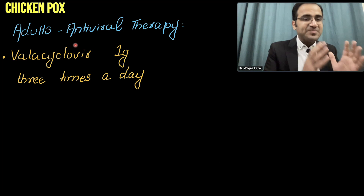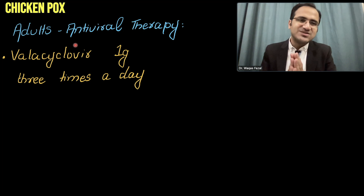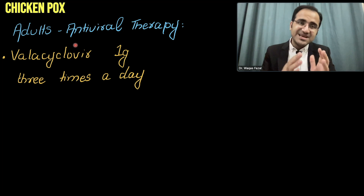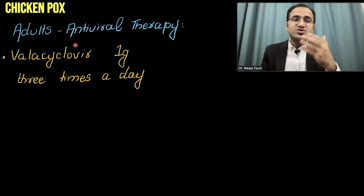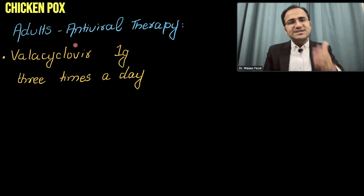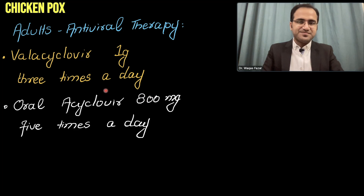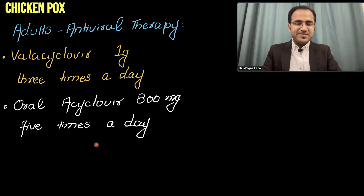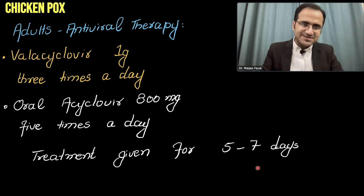In an unvaccinated adult, antiviral therapy is given and should be started within 24 hours. Valacyclovir 1 gram 3 times a day, or oral acyclovir 800 mg 5 times a day — you can choose either one. Treatment is given for 5 to 7 days.